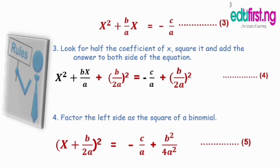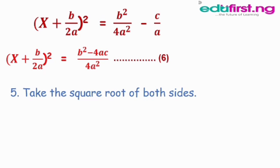Rule four says: factor the left side as the square of a binomial. We collect the squared terms to get equation five. On the right side of equation five we have negative c over a plus b squared over 4a squared — because b over 2a times b over 2a: b times b is b squared, two times two is four, and a times a is a squared, giving b squared over 4a squared.